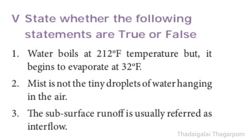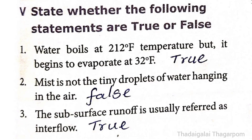Roman Number 5: State whether the following statements are True or False. 1st: Water boils at 212 degrees Celsius temperature but it begins to evaporate at 32 degrees Celsius — It is True. 2nd: Mist is not the tiny droplets of water hanging in the air — It is False. 3rd: The subsurface runoff is usually referred to as interflow — It is True.